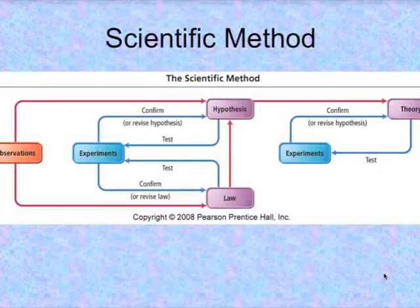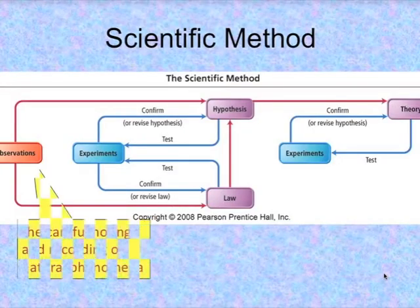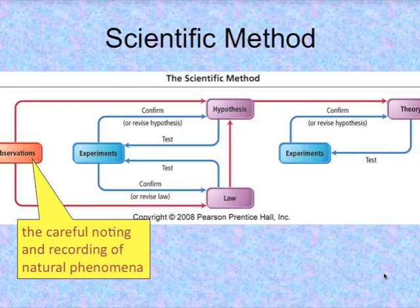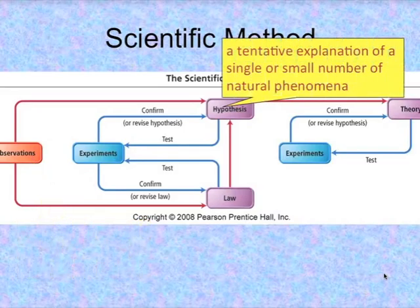A little about the scientific method. All science begins, really, with observation. Careful noting and recording of natural phenomena. But a scientist, by and large, is curious. And he sees an observation and he sees a phenomenon that he doesn't understand. And he wants to understand. So one part of the process, then, is to make a tentative explanation to explain what's behind the observation. We call that tentative explanation a hypothesis.